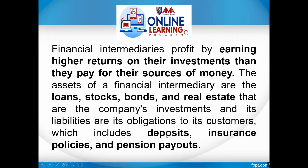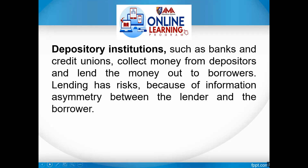There are two major types of financial institutions: depository and non-depository. Depository institutions collect money from clients — banks and credit unions collect money from depositors and lend it out to borrowers. Lending carries risks because of information asymmetry between the lender and the borrower: borrowers know far more about their ability and willingness to pay than lenders do.